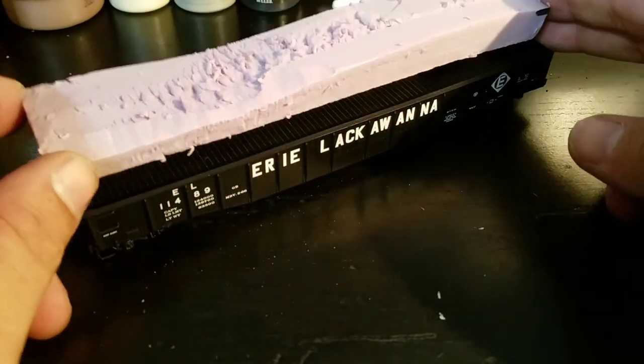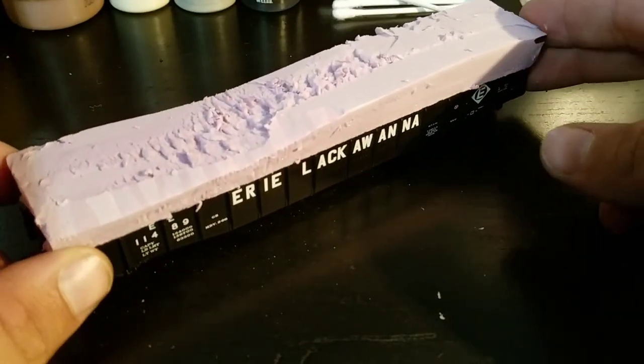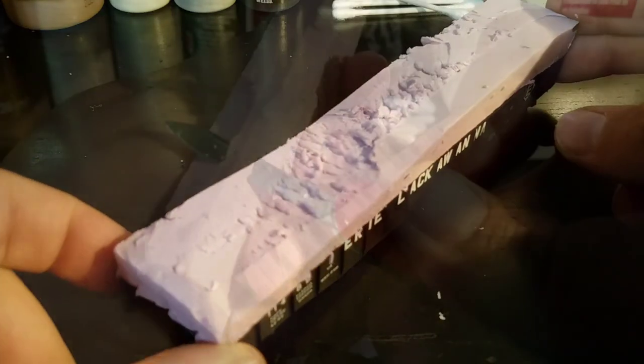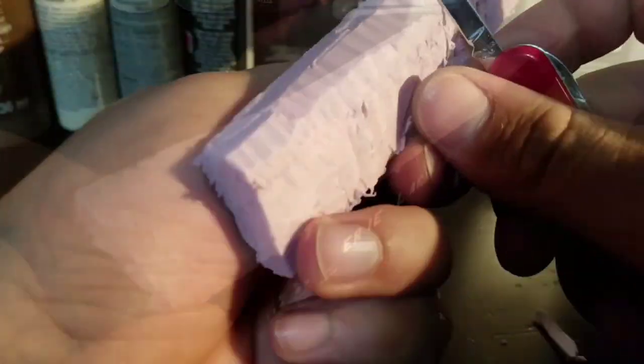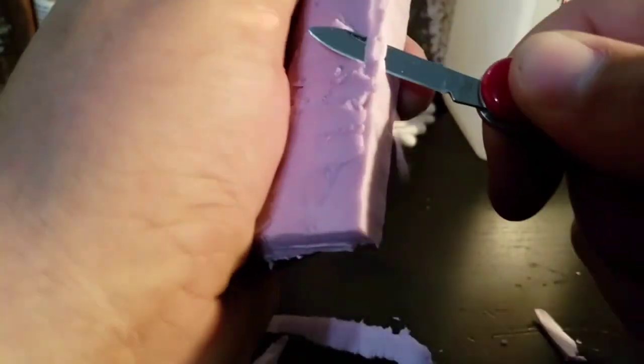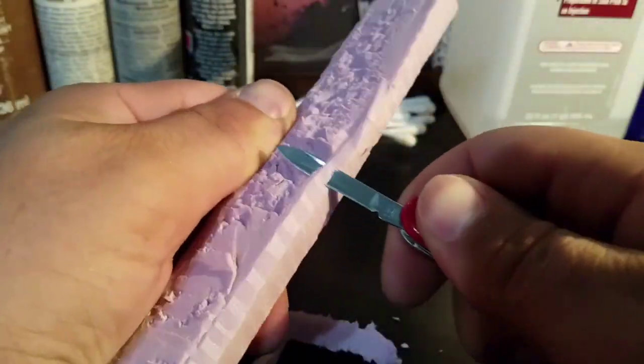To begin, I started by tracing and cutting the foam that I would be using for the base. I like using foam because it's very lightweight, which will keep the cars from being top-heavy and less prone to wobbling. After I get a good fit in the car, then I focus on rounding the top where the load would occupy.